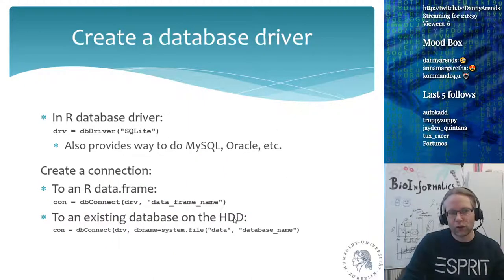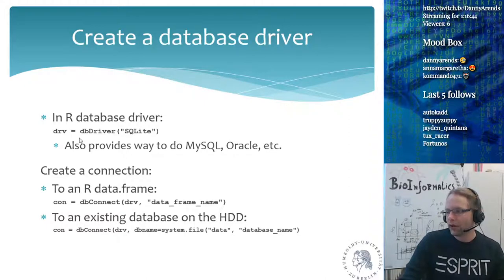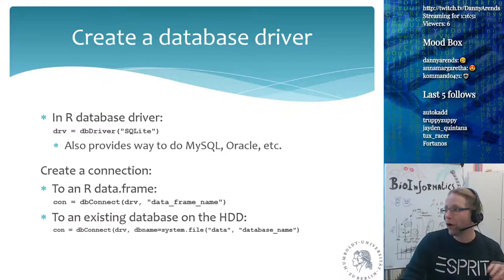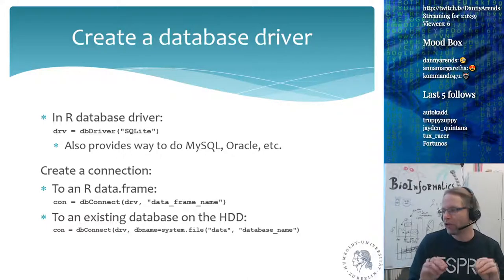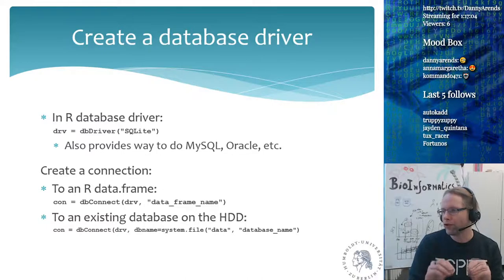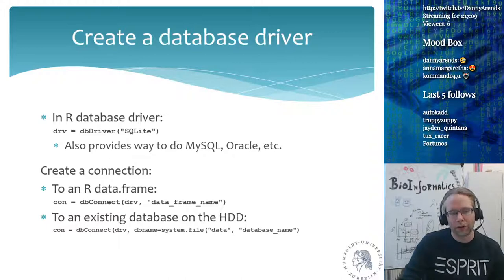The way this works in R is that you first have to create a database driver. The DB driver provides a way not just to connect to an SQLite database, but you can also connect to other database sources like MySQL, Oracle, or PostgreSQL. The driver is kind of the connection object in R — you get a variable and using this variable you can then query the database.